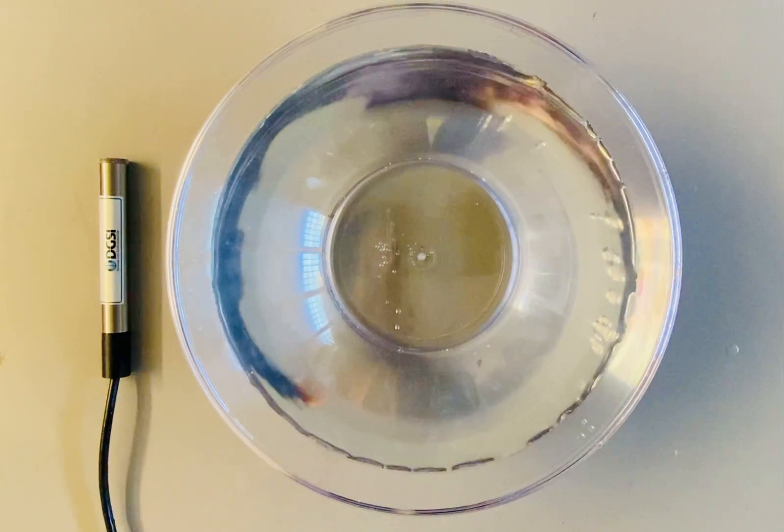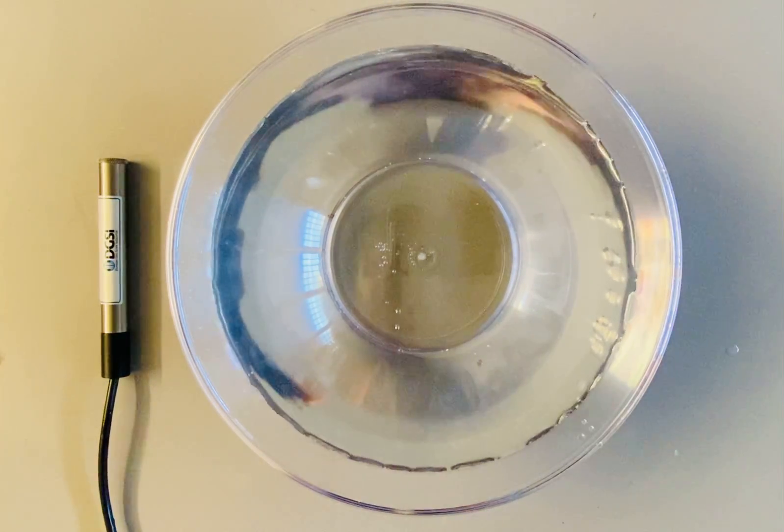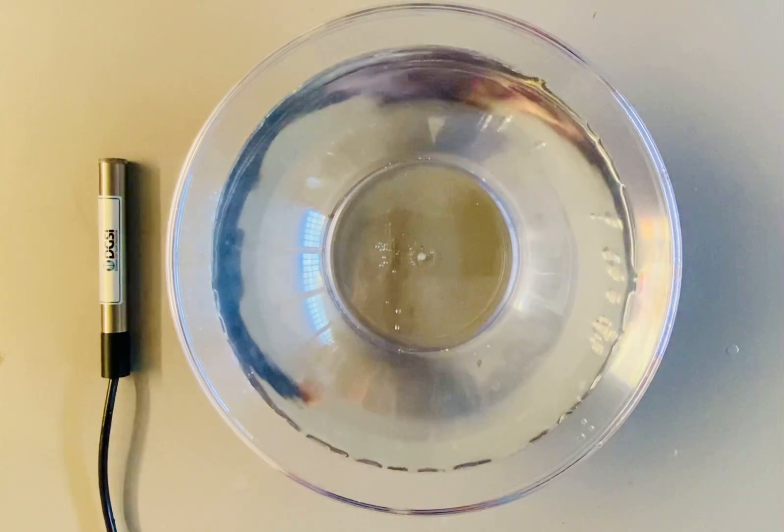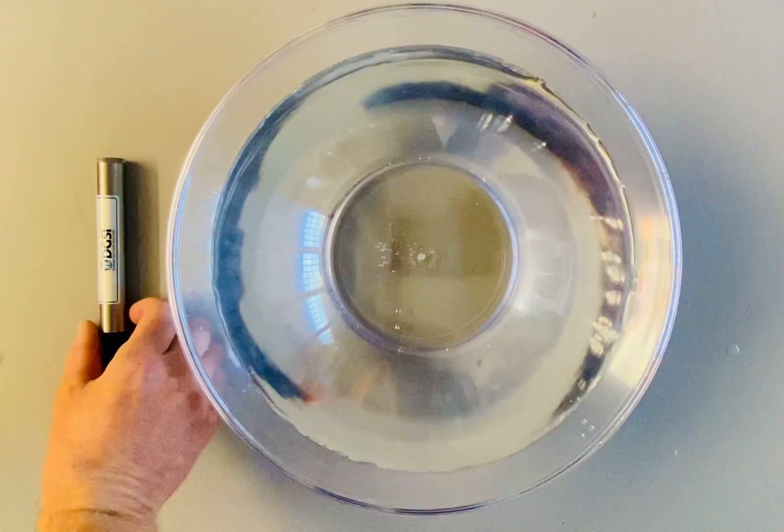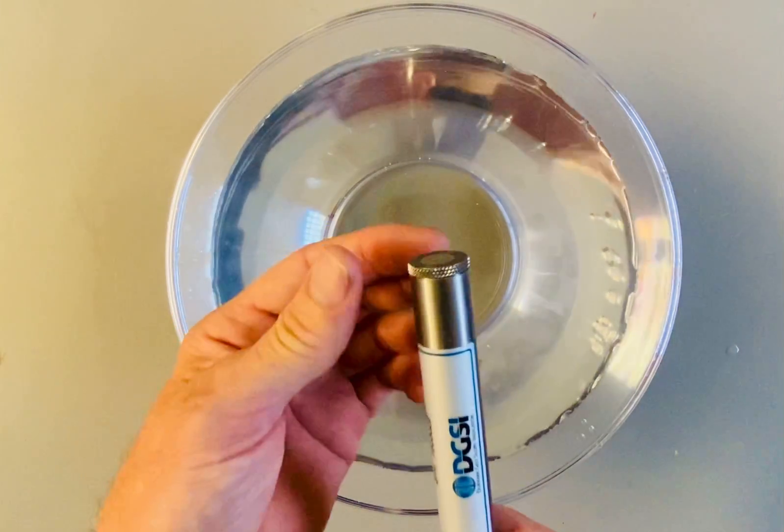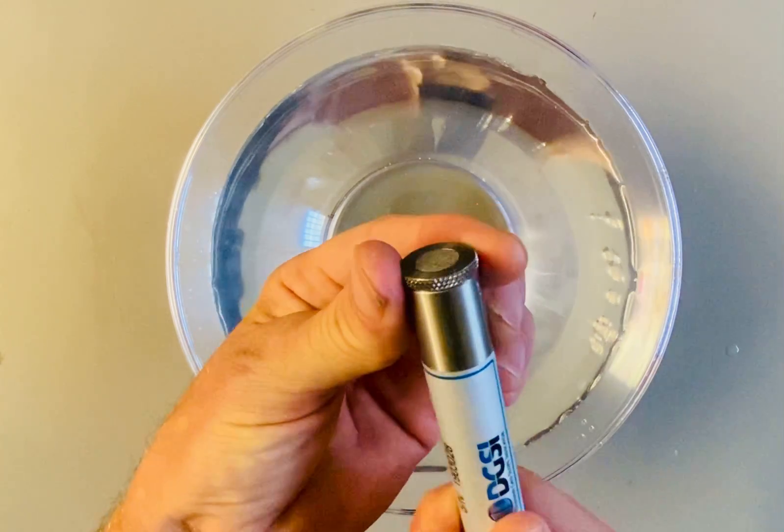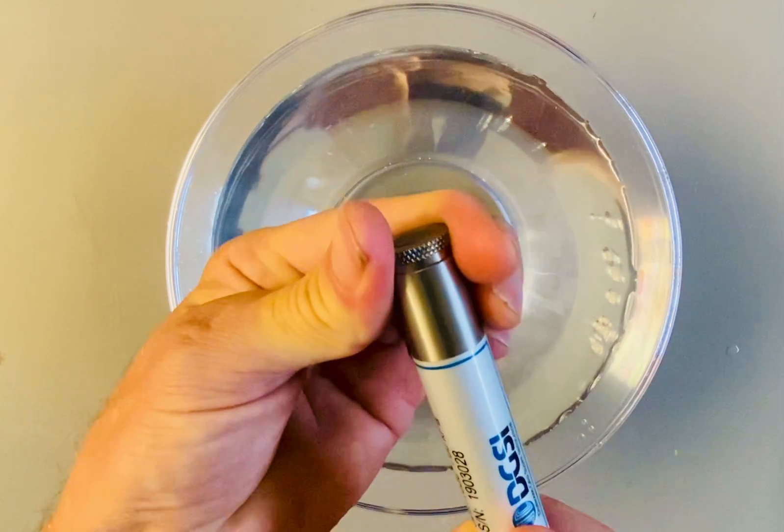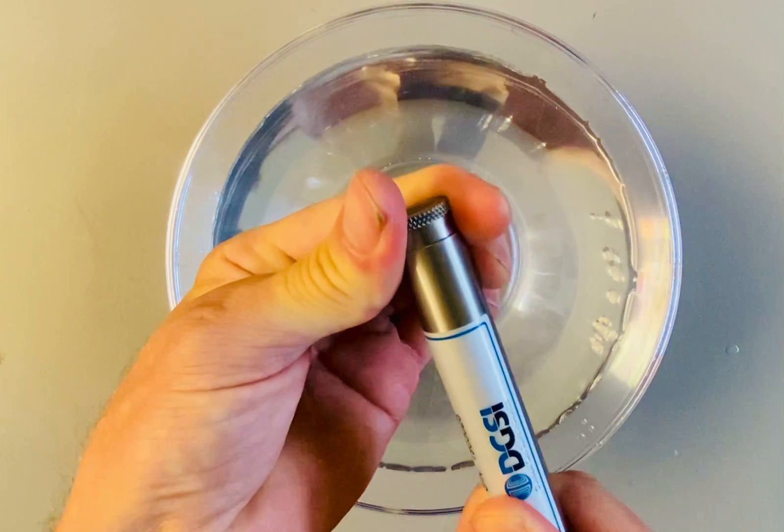This video explains how to saturate the filter of a vibrating wire piezometer. First, take your piezometer and remove the filter by pulling it and gently twisting it by hand.